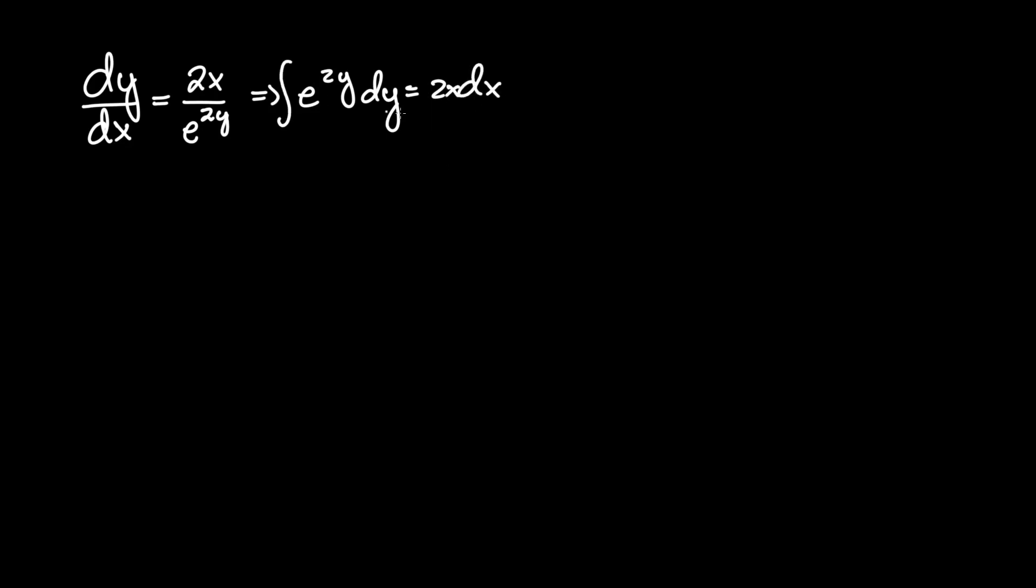Now we can integrate them with their respective variables where the integral of e to the 2y is 1 half e to the 2y and the right hand side is simply x squared plus c.